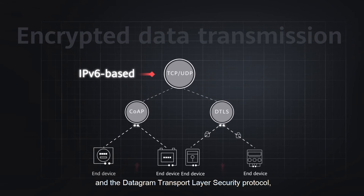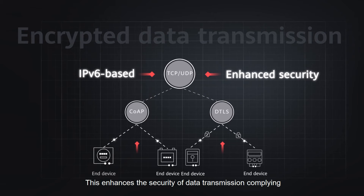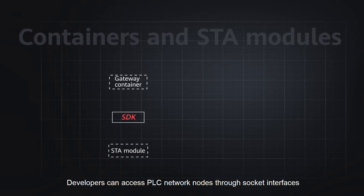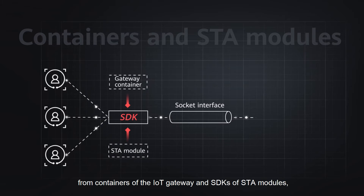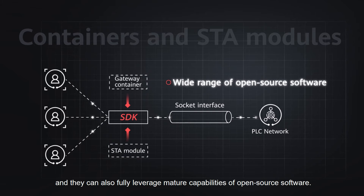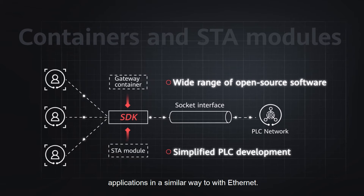And the Datagram Transport Layer Security Protocol, or DTLS, can be used to implement access authentication and encrypted data transmission for end devices. This enhances the security of data transmission complying with the high-speed PLC or IEEE 1901.1 standard. Developers can access PLC network nodes through socket interfaces from containers of the IoT gateway and SDKs of star modules, and can fully leverage mature capabilities of open source software. As such, it is easy for developers to quickly develop applications in a similar way to with Ethernet, greatly simplifying PLC development.